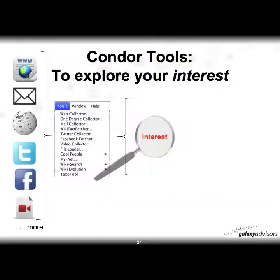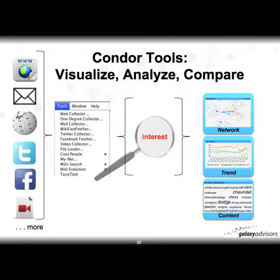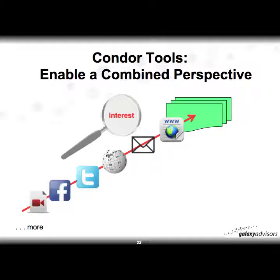At this point the fun begins — use the Condor tools to explore your area of interest. You can mine the web, email, Wikipedia, Twitter, Facebook, videos, and more. You have the ability with Condor to visualize, analyze, and compare different networks side by side and on top of one another. This enables a combined perspective over time, which is a very powerful way to explore your area of interest and find out who is within that space. Enjoy — that concludes all the steps for installing the various software to have Condor running on a PC.